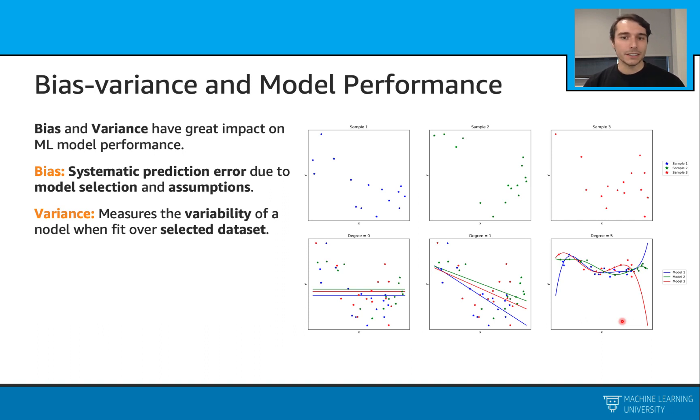When we look at the variance of degree zero versus degree five here, we can quickly realize that we will have high variance here because the models fluctuate a lot, whereas we will have low variance in degree zero because our models are just constant straight lines.